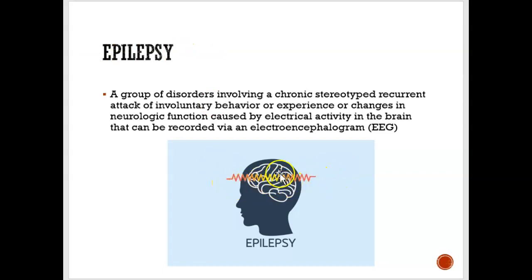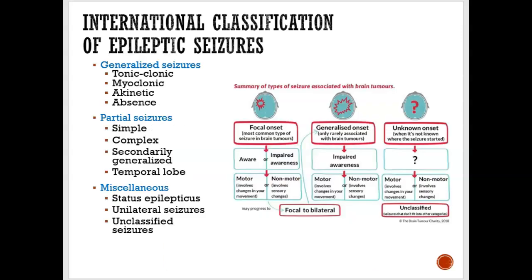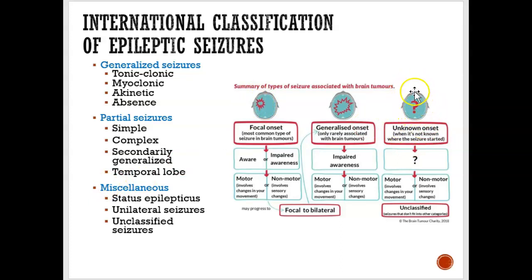When someone has epilepsy, there is abnormal electrical activity in their brain that causes a seizure. There are three classifications of seizures: generalized seizures, partial seizures, and seizures of unknown onset. In a generalized seizure, the electrical activity is happening all over the brain. In a partial — or focal — seizure, it's happening in just one section of the brain. In unknown onset, we don't know where the seizure started.